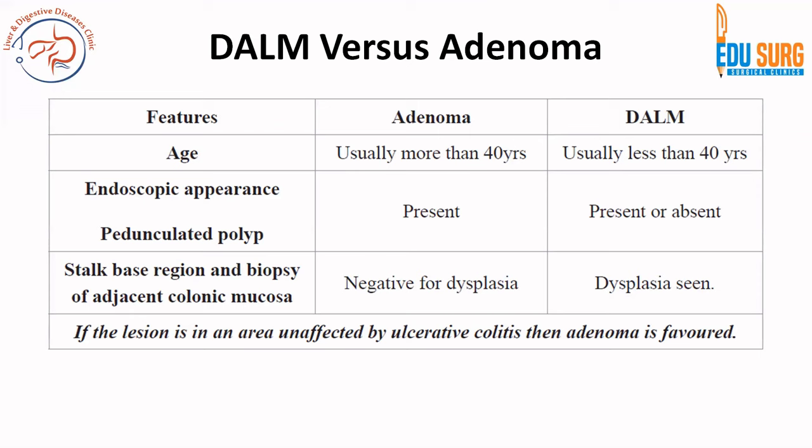Coming to differentiation between DALM and adenoma: if a lesion is in an area unaffected by ulcerative colitis, then an adenoma is favored. This is a very important point — lesions away from the area of ulcerative colitis favor adenoma. DALM, or dysplasia-associated lesion or mass, is more common in patients under 40 years and they may not have a polyp. When you biopsy the base region, dysplasia will be seen in DALM, whereas in adenoma this area will be negative for dysplasia.